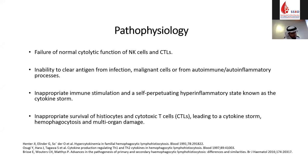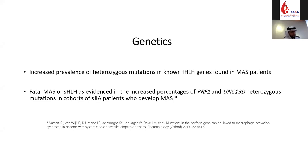Regarding genetics: where initially there was no known genetic predisposition for MAS, there is now increased prevalence of heterozygous mutations in known familial HLH genes found in macrophage activation syndrome patients. Fatal MAS or secondary HLH was found in those who had heterozygous mutations of the two genes most commonly found in primary HLH. The presence of these mutations is very important for the outcome — they probably indicate a more aggressive type of macrophage activation syndrome.